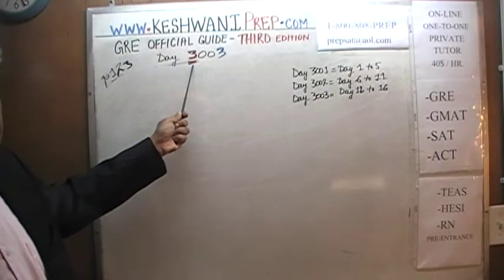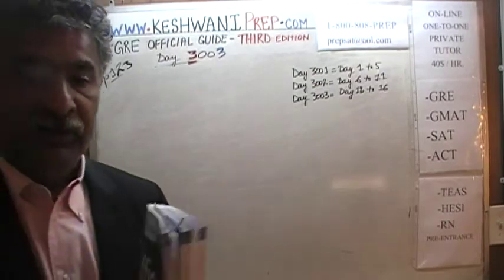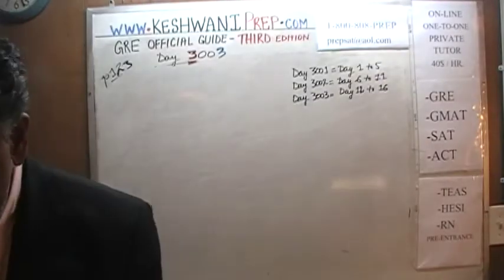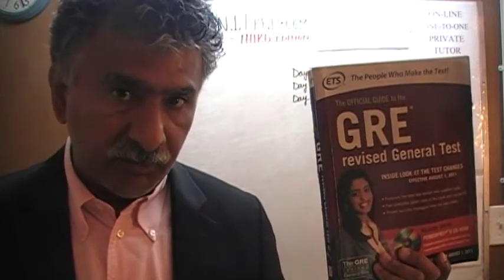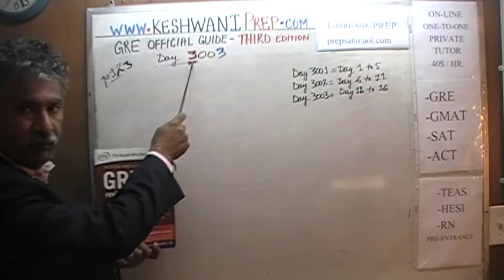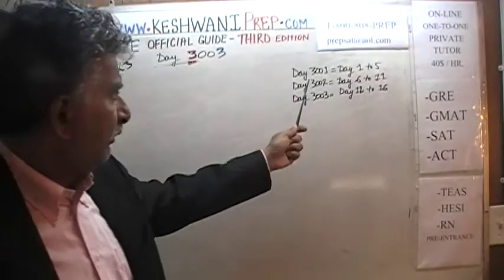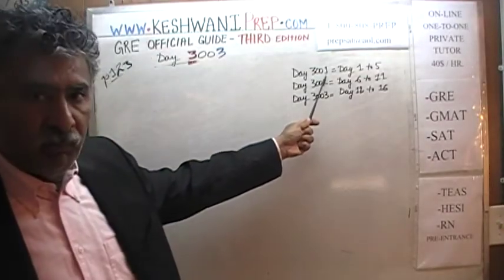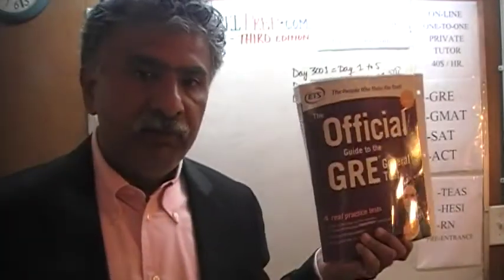On the blackboard it shows here as day 3003. Three is to indicate that it's a third edition series. As I have already told you before, yesterday and the day before, we have already solved every single math problem that appeared in the first and the second edition. To keep the two series separate, we started numbering them as 3001. Day one was 3001, indicating the third edition.